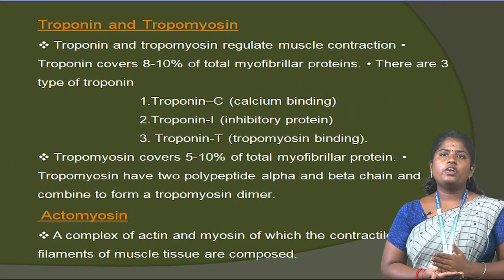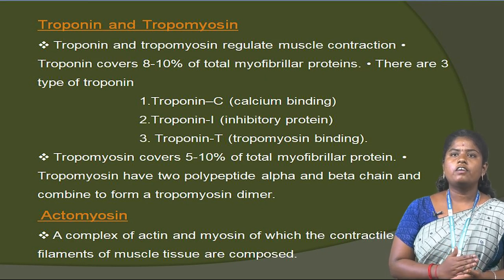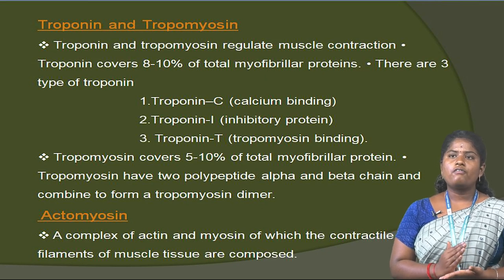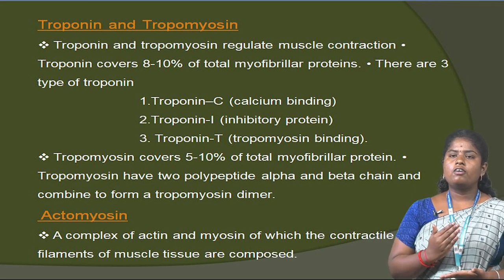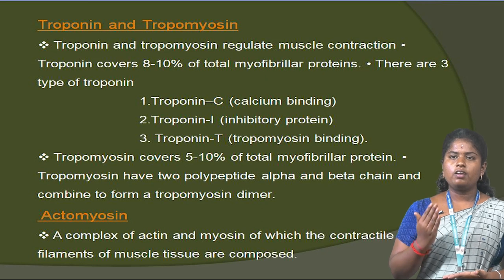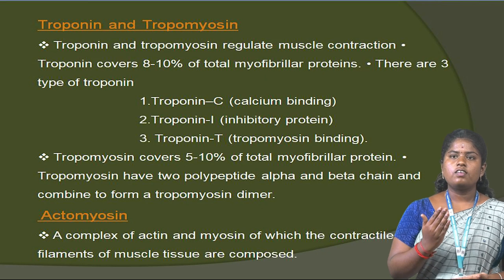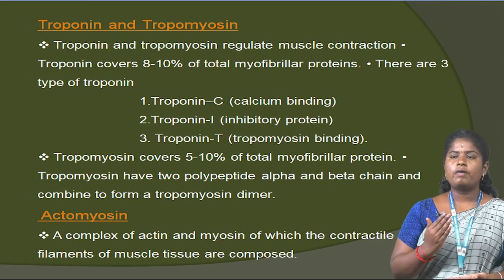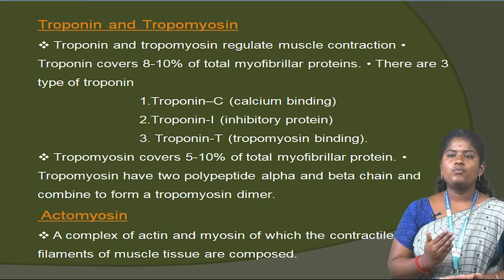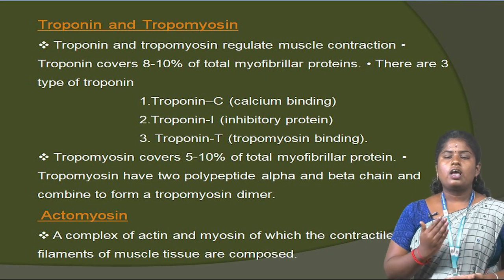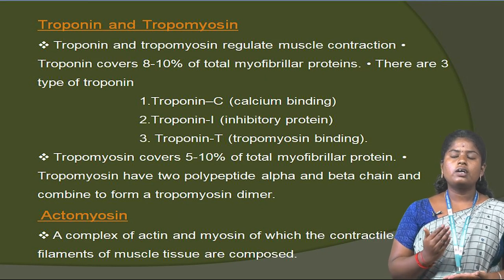Troponin and tropomyosin regulate muscle contraction. Troponin constitutes 8 to 10% of the total myofibrillar protein. There are three types of troponin: troponin C, troponin I and troponin T. Troponin C is a calcium-binding protein; troponin I is an inhibitory protein; troponin T is a tropomyosin-binding protein. Tropomyosin constitutes 5 to 10% of total myofibrillar protein and has 2 polypeptide alpha and beta chains that combine to form a tropomyosin dimer. Actomyosin is a complex of actin and myosin, of which the contracted protein filaments of muscle tissue are composed.